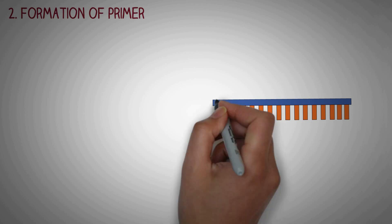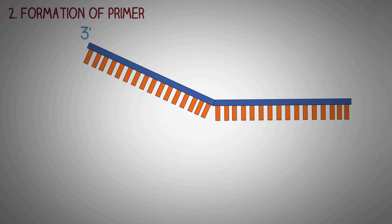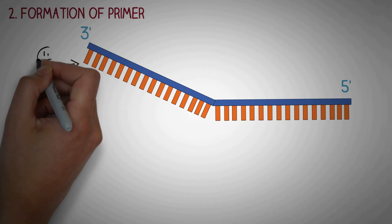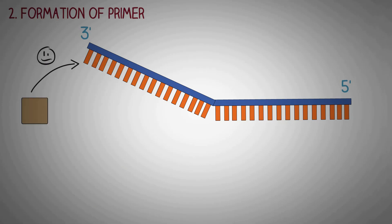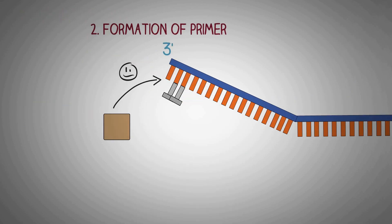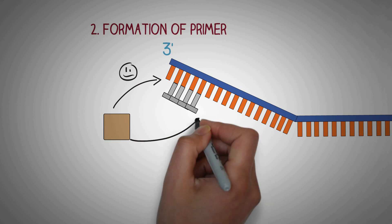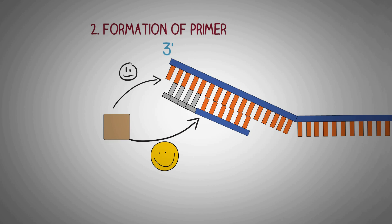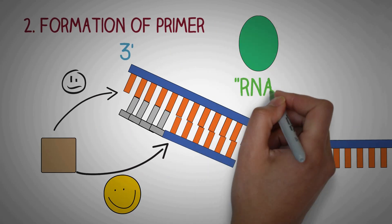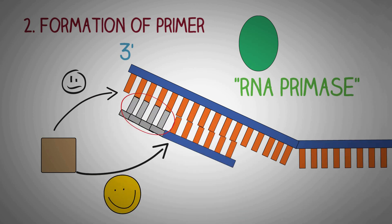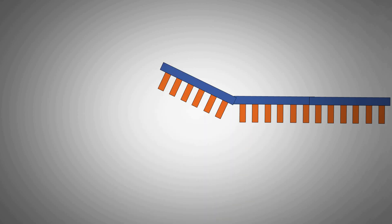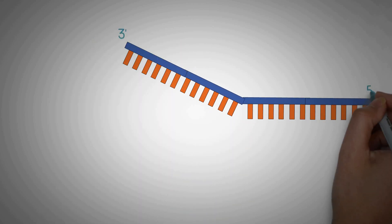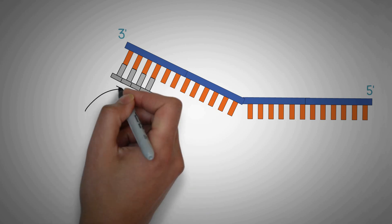After the formation of the replication fork, the next important step is the formation of an RNA primer. The DNA polymerase enzyme can only add new nucleotides to the three prime end of an existing nucleotide strand, which means it cannot start synthesizing new DNA from scratch and requires a short segment of nucleotides to begin. This problem is solved by the enzyme RNA primase, which makes an RNA primer — a short stretch of nucleic acids complementary to the template — that provides the three prime end for the DNA polymerase to work on.